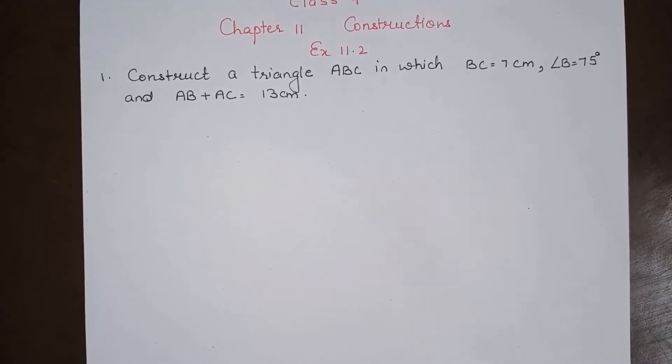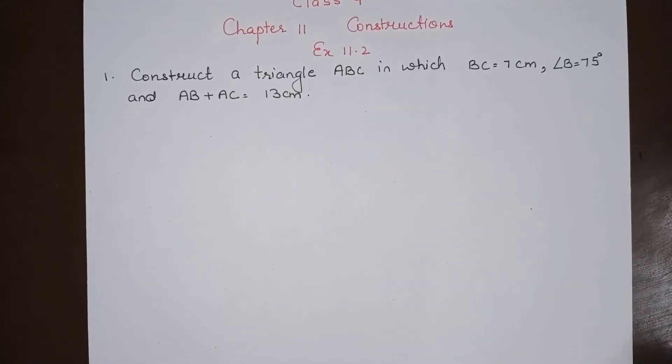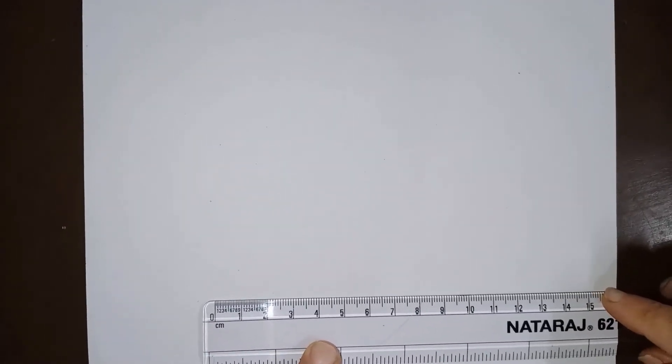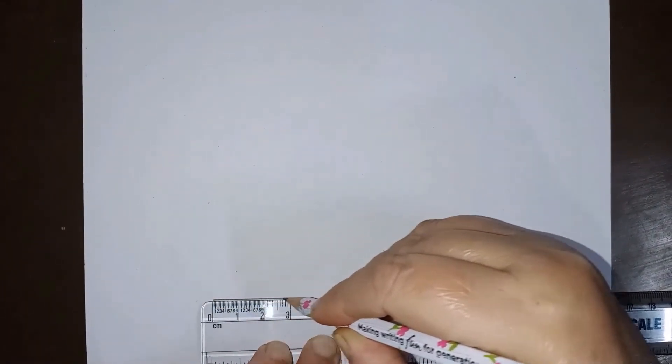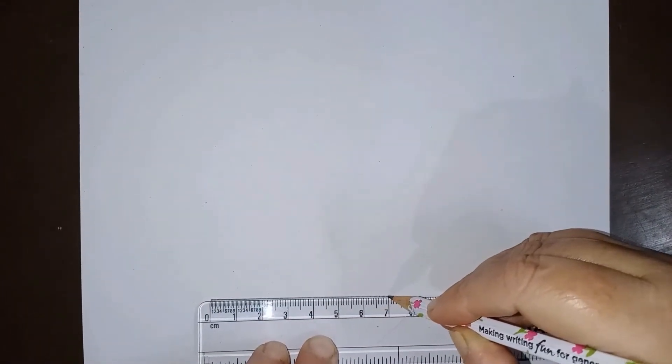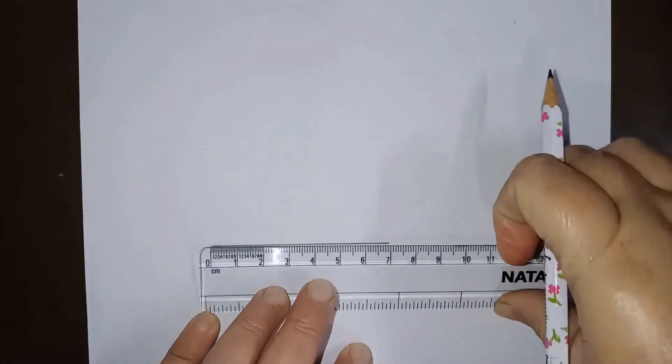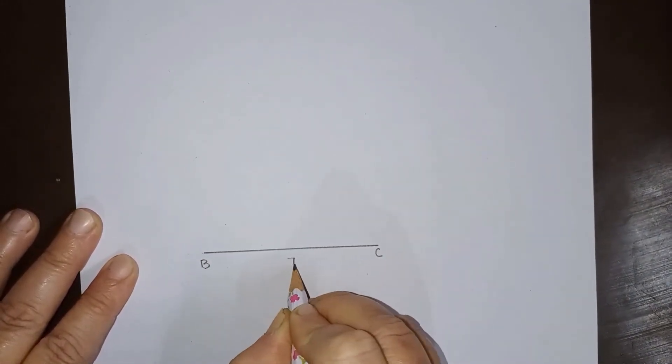Now to start with, we will first draw base BC which is given to be 7 cm. So we will draw this base BC 7 cm. So this is BC which is equal to 7 cm.